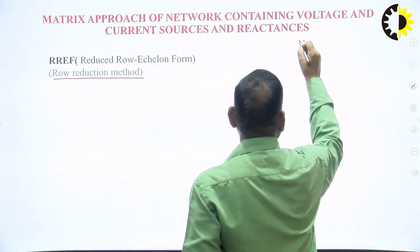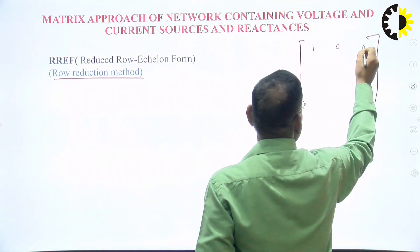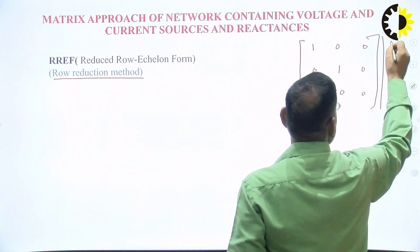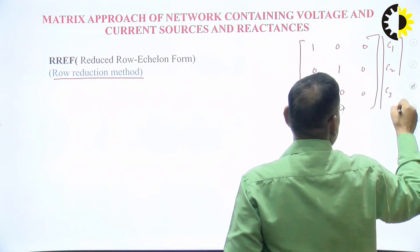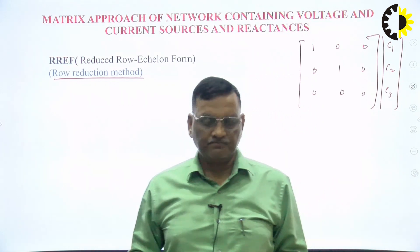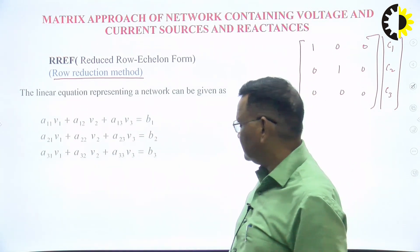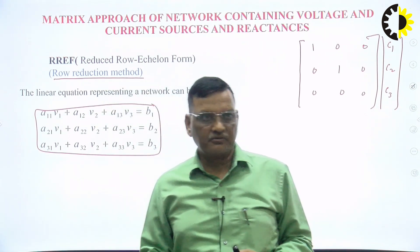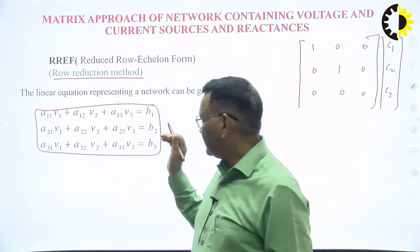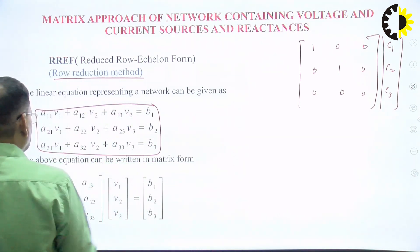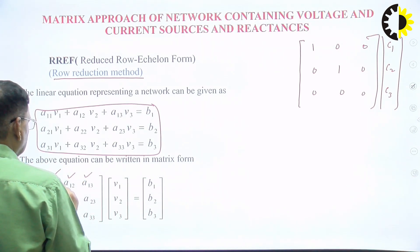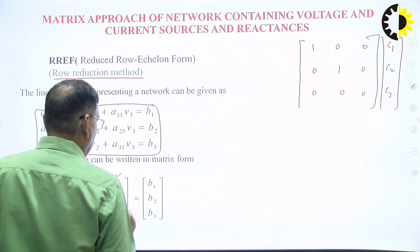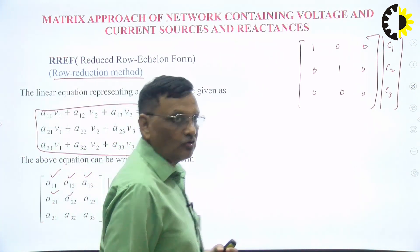Our job is to get the matrix in reduced row echelon form. Suppose it is a 3×3 matrix with variables C1, C2, C3 — these will give the values of your unknowns. The equations are written based on Kirchhoff's current law or Kirchhoff's voltage law. After writing these equations, we write them in matrix form where the coefficients are elements of the network and b1, b2, b3 are the right-hand side values.